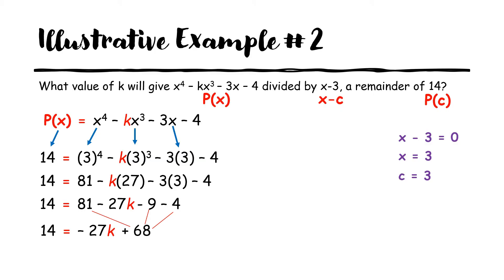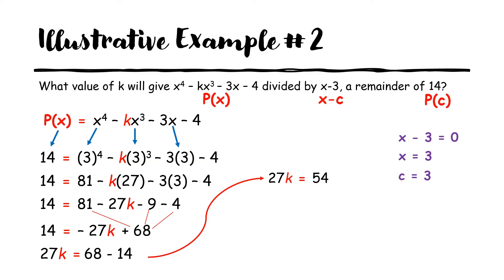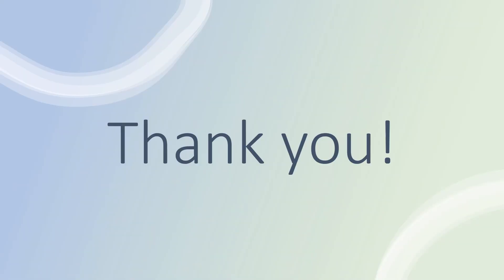Now we isolate k on one side of the equation: 27k equals 68 minus 14, so 27k equals 54. Dividing both sides by 27, k equals 2. Therefore k should be 2 so that when you divide x⁴ minus kx³ minus 3x minus 4 by x minus 3, the remainder is 14. That's it — thank you for watching and hope you learned something from this video!